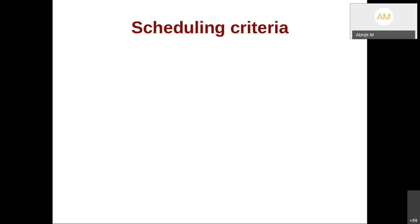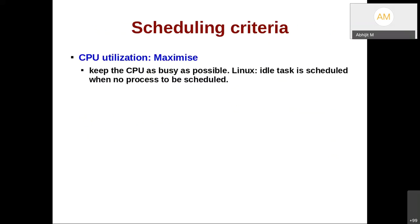Now let us come to the scheduling criteria, which are used to evaluate how good a scheduling algorithm is. First is CPU utilization, which should be maximized — how busy the CPU is. If you invested in buying a CPU, you obviously want it utilized as much as possible.